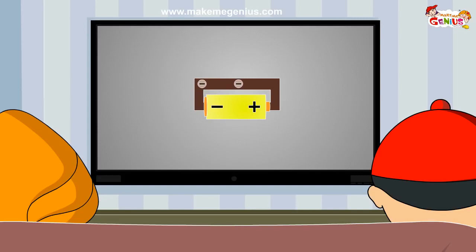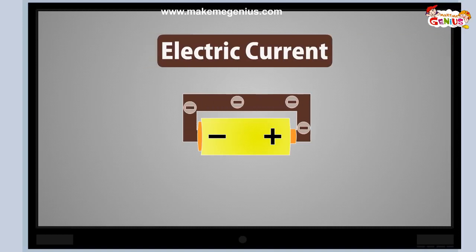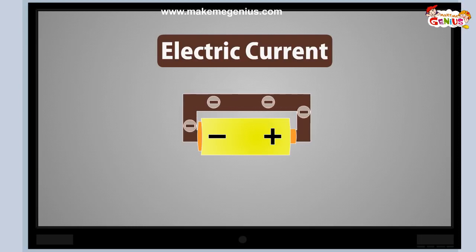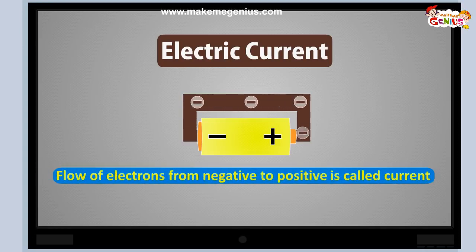When electric charges move in a wire, we say that an electric current flows in the wire. It's like the way a current of water flows in a river. It is like a constant flow of electrons through something. When a wire is connected to each end of the battery, electrons begin to flow from negative to positive — from minus to plus. And this flow of electrons is called current.